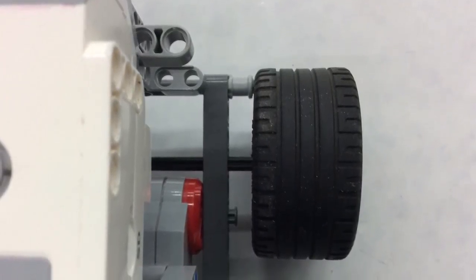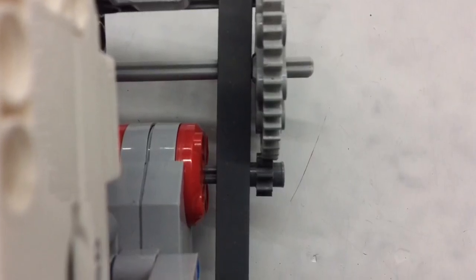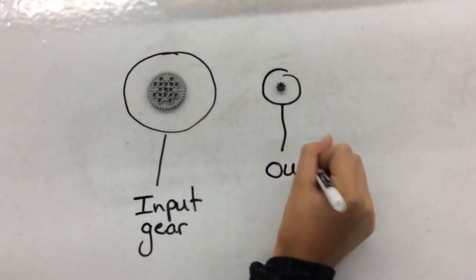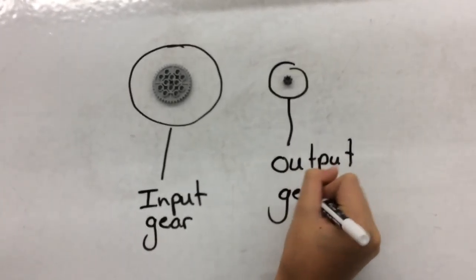At first, we didn't even put gears on the robot. Then, we put a small gear on the input and a big gear on the output, but it still didn't work. Instead, we put the big gear as the input and the small gear as the output. This did work.